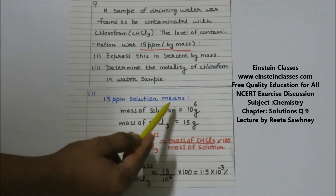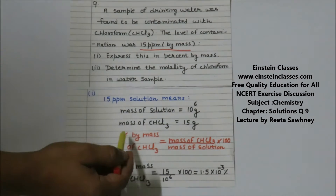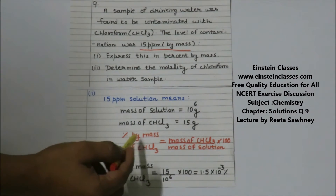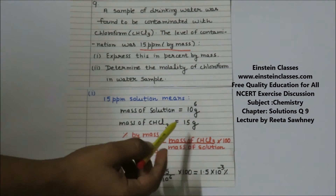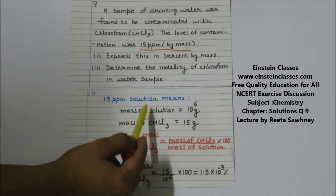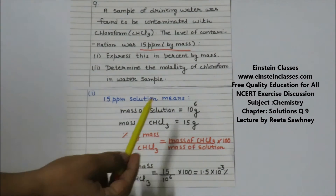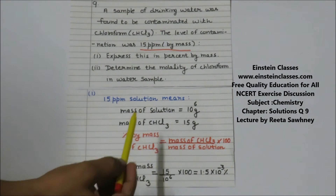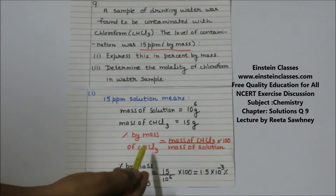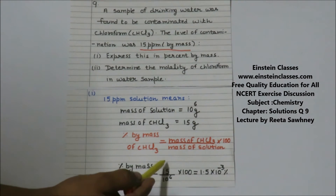To find the percentage by mass of chloroform, we use the formula: percentage by mass = mass of chloroform divided by mass of solution, multiplied by 100. We have 15 grams of chloroform present in 10^6 grams of solution. We need to find the chloroform present in 100 grams of solution.